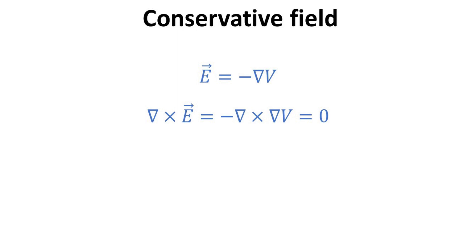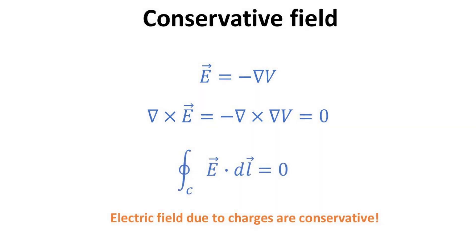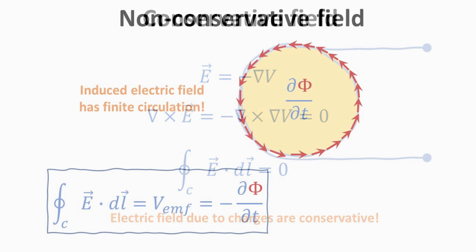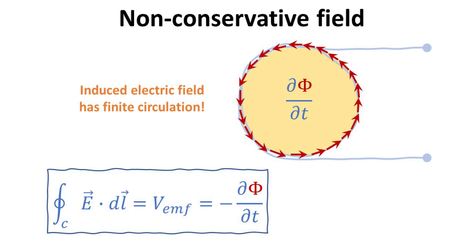Is the finite electric field circulation in contradiction with electrostatics? In electrostatics, the electric field is conservative, and we can always uniquely define it in terms of the gradient of a scalar potential V. The curl of E is therefore required to be zero, since the curl of the gradient of any scalar function must be zero. Thus, the curl of electric field produced by charges must be zero, and Stokes' theorem requires that its circulation over any closed path be zero — fields with such property are called conservative fields. On the contrary, the induced electric field described by Faraday's law is non-conservative, since it has a finite circulation, forms closed loops, and the work done by the induced electric force in a closed loop is finite — this force is called the electromotive force.